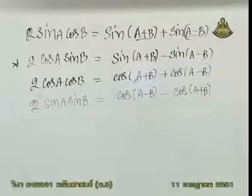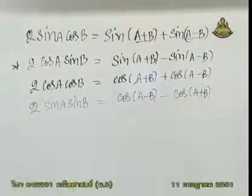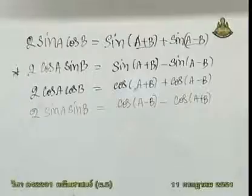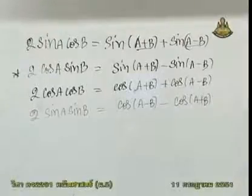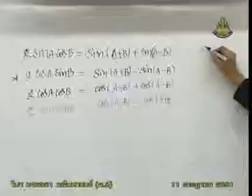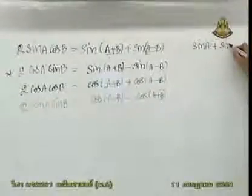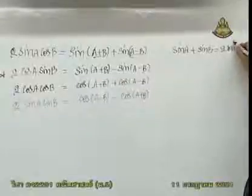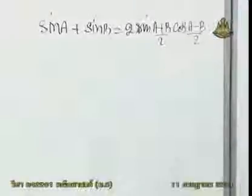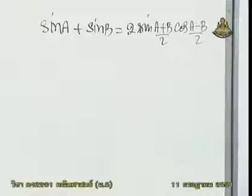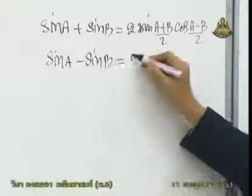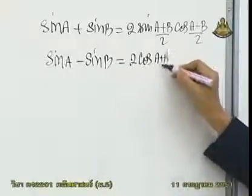จำสูตรหลักนี้ให้ได้ แล้วใช้การ substitution ที่เคยสอนนะ ว่าให้ a+b เป็น x หา a ให้ได้ หา b ให้ได้ มันก็จะได้สูตรใหม่อีกสูตรหนึ่ง ซึ่งสูตรนั้นก็คือการเปลี่ยนจากผลบวกให้เป็นผลคูณ. นั่นก็คือ sin a บวก sin b เท่ากับ 2 sin(½(a+b)) cos(½(a-b)). หรือ sin a บวก sin b ก็เป็น 2 sin(half sum) cos(half difference).